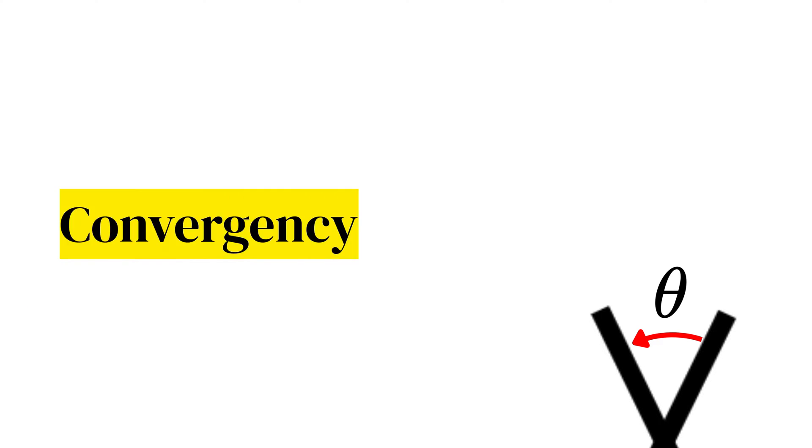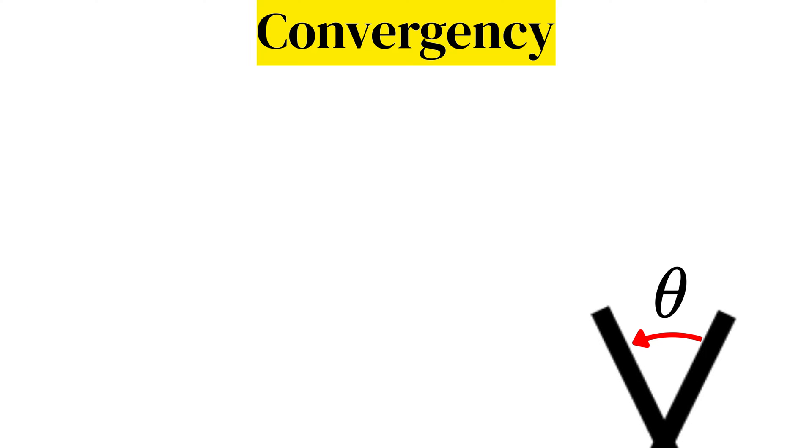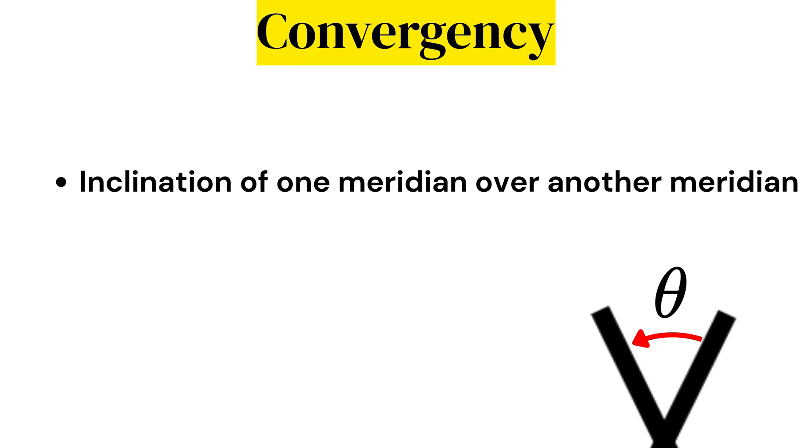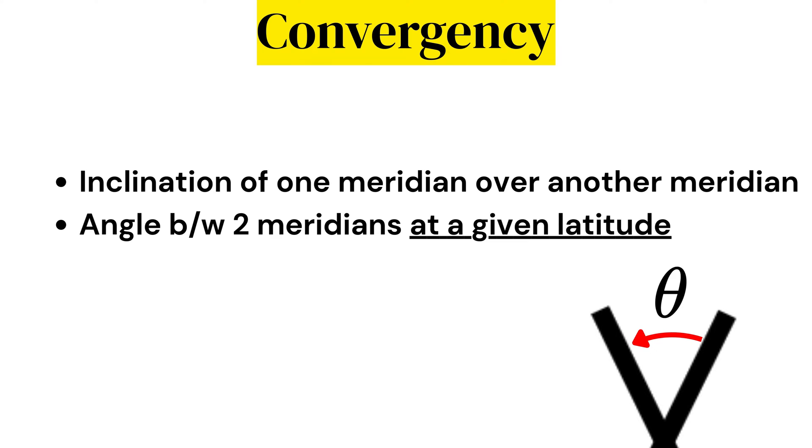This angle is what we call convergency, or how DGCA likes to define it: the inclination of one meridian over another meridian, or simply the angle formed between two meridians at a given latitude.